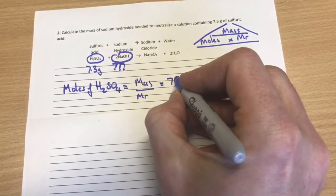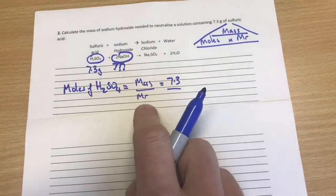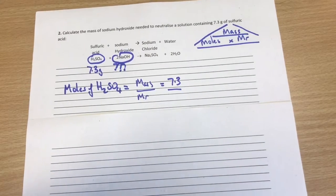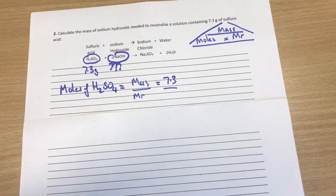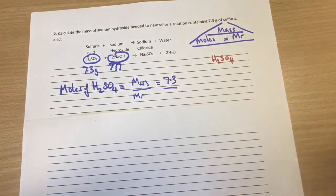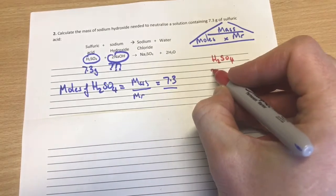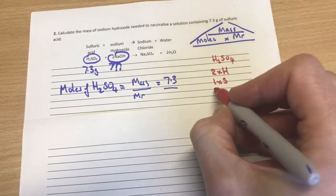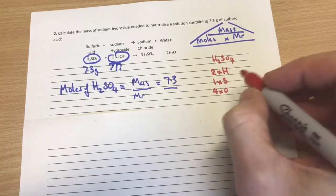Then we can transfer the mass from the question, which is 7.3. And I've got a little bit of work here. So I'm going to change color for a second. What we've got to do here now is work out the mass of the sulfuric acid. So sulfuric acid is H2SO4. This means it contains two lots of hydrogen, one lot of sulfur, and four lots of oxygen.